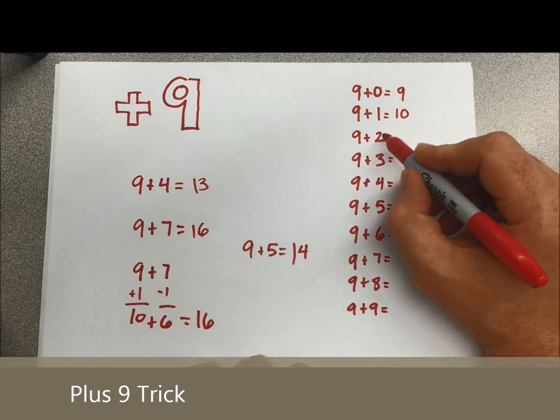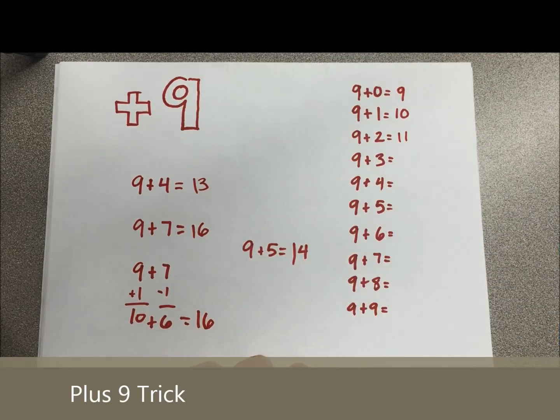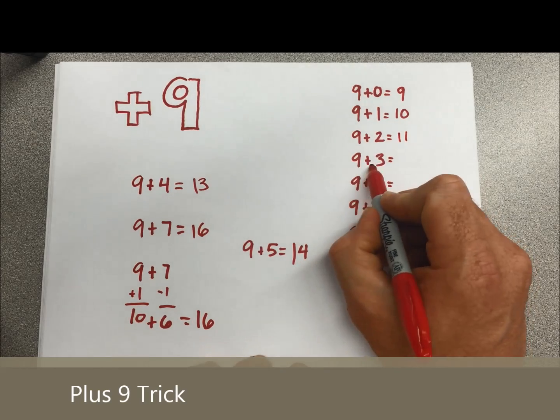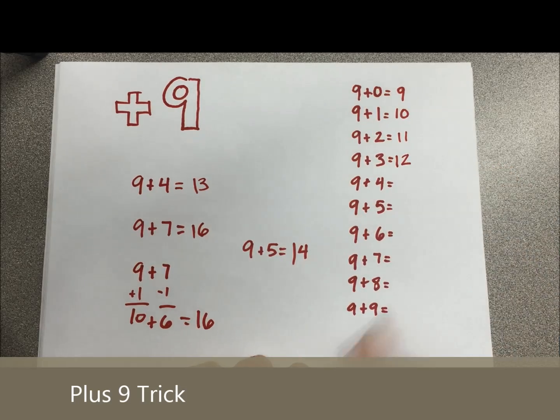Let's run through the plus 9 trick for the rest. 9 plus 2, drop down to 1, slap a 1 in front, the answer is 11. 9 plus 3, 3 drops down to 2, slap a 1 in front, the answer is 12.